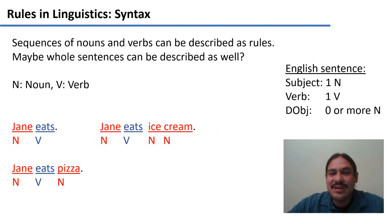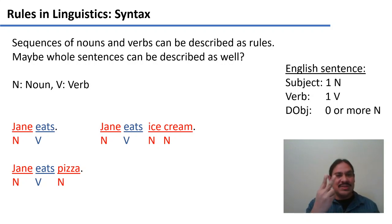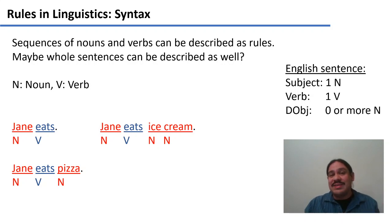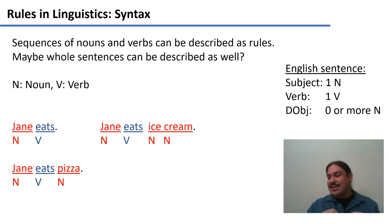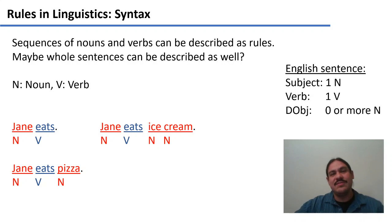Let's see if we can have more sentences. We have 'Jane eats' and 'Jane eats pizza.' How about 'Jane eats ice cream'? The subject remains one noun, the verb is one verb, and the direct object can be two nouns: ice cream. So now our English sentence can be one noun for the subject, one verb, and then zero, one, or two nouns. It could actually be three or more — 'Jane eats chocolate ice cream,' zero or three nouns; 'Jane eats Vermont chocolate ice cream,' zero or four nouns. So in general, an English sentence is maybe one noun, one verb, and zero or more nouns for the direct object.